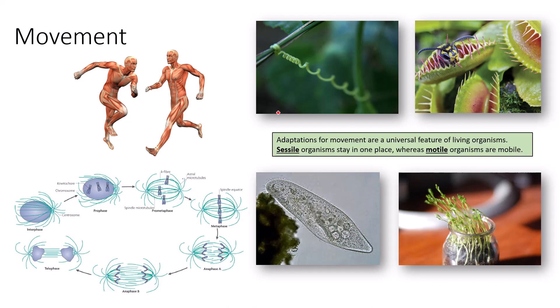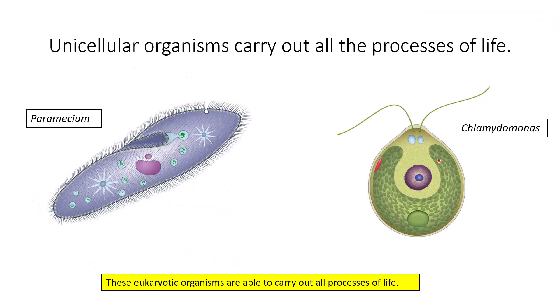Movement is a fundamental property of all living things, and adaptations for movement are a universal feature of living organisms. Sessile organisms stay in one place, whereas motile organisms are mobile. It is important to appreciate that some organisms live a sessile lifestyle while others live a motile mode of life. Unicellular organisms carry out all the processes of life — we now need to look at those processes within two unique unicellular organisms: a single-celled eukaryote resembling an animal cell, and one resembling a plant cell.